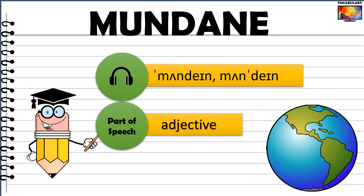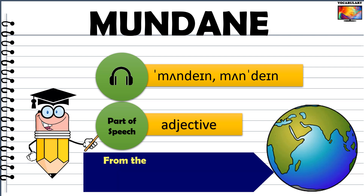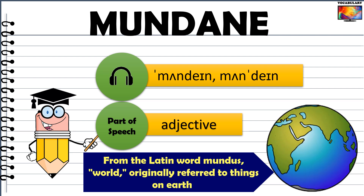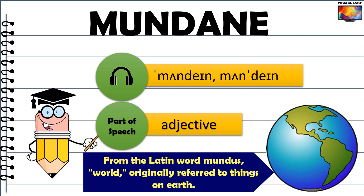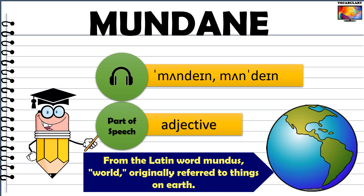Our first word for today's lesson is mundane. It's an adjective. Mundane comes from the Latin word mundus which means world. The word mundane originally referred to things on our earthly world, and as opposed to the luxuries of heaven, the things on earth are supposed to be so dull and uninteresting — which lends this word its present meaning.